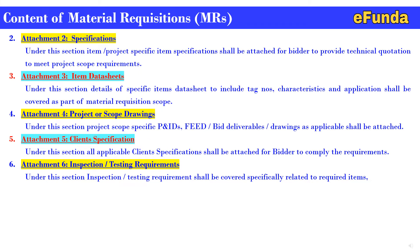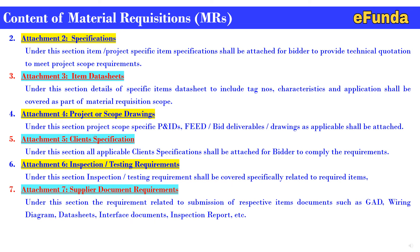Attachment 6 is inspection and testing requirement. Under this section, inspection and testing requirements shall be covered specifically related to the required item — their quality, inspection points, and testing requirements. Attachment 7 is the supplier document register or requirement. Under this section, requirements related to submission of respective item documents such as GAD, wiring diagram, data sheet, interface document, inspection report, dispatch material, etc. will be covered.